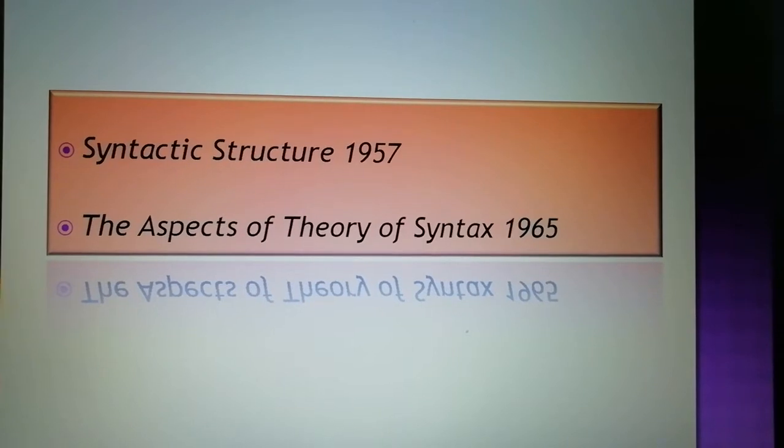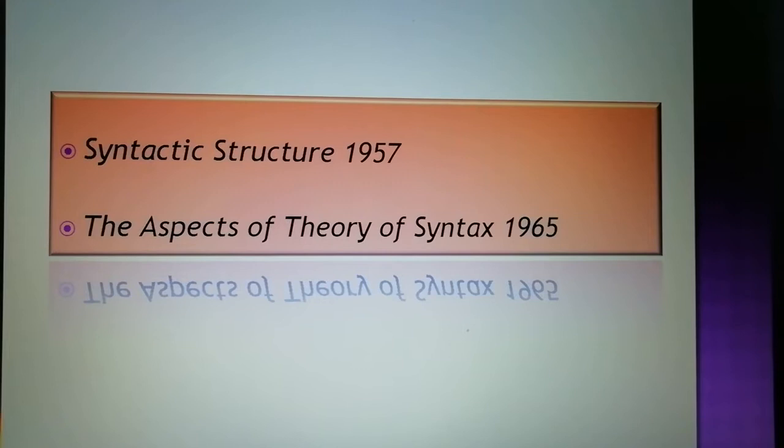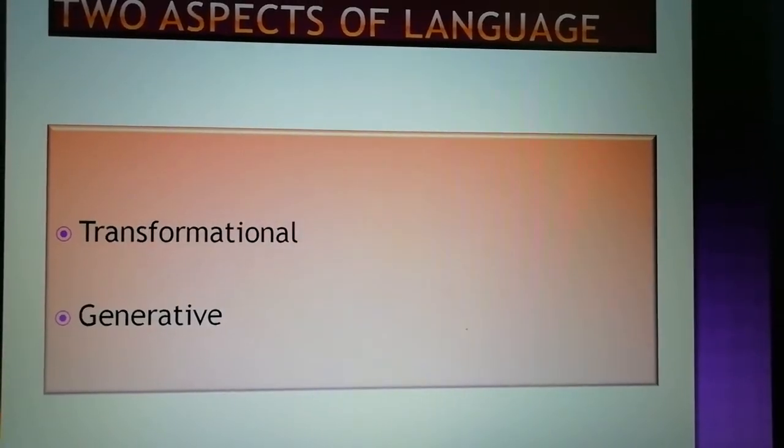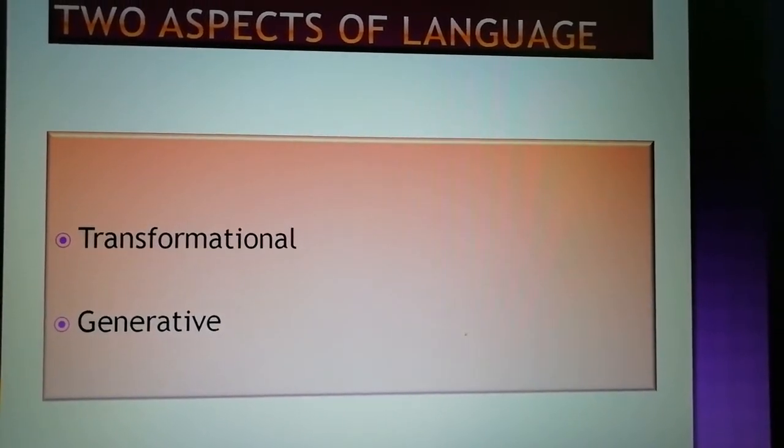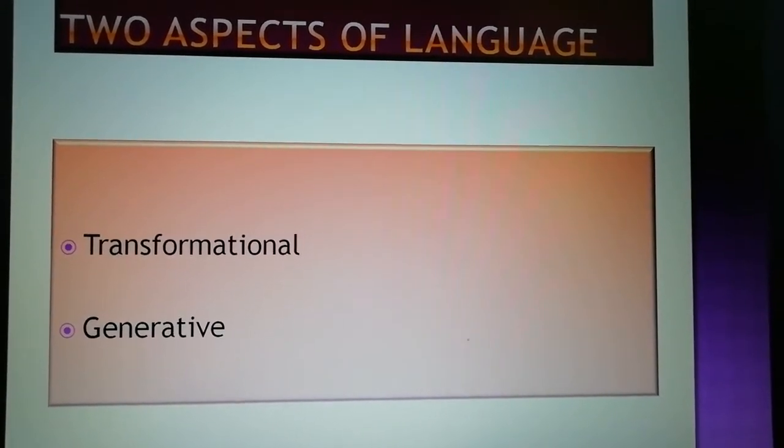As the name suggests, this grammatical model has two aspects: transformational and generative. It is transformational in the sense that all complex or sophisticated sentences are transforms of basic types of sentences.